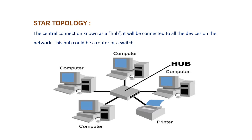The next is star topology, in which all the devices in the network are arranged like a star. Here, a hub is the device used to connect all the devices. The main disadvantage of this topology is if the hub goes down, the entire network will be down.